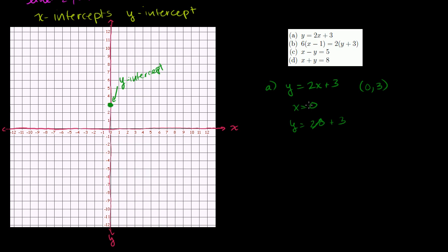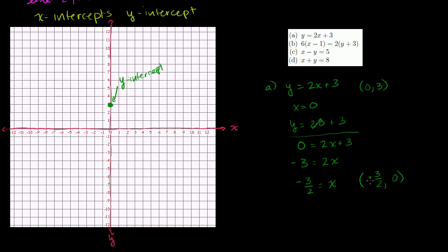Now let's find the x-intercept by setting y = 0. If y = 0, we have 0 = 2x + 3. Subtract 3 from both sides: negative 3 = 2x. Divide both sides by 2: x = negative 3/2, which is the same as negative 1 and one half. So the point (−3/2, 0) also sits on the line.